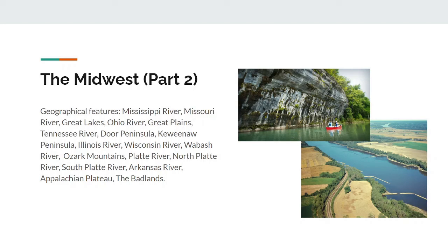Important geographical features in this area include the Mississippi River, the Missouri River, the Great Lakes, the Ohio River, the Great Plains, the Tennessee River, the Door Peninsula, the Keweenaw Peninsula, the Illinois River, the Wisconsin River, the Wabash River, the Ozark Mountains, the Platte River, the North Platte River, the South Platte River, the Arkansas River, the Appalachian Plateau, and finally the Badlands.